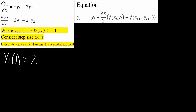This is for one equation. We will also do another equation for y2(1), but right now we're just doing y1(1). So plus delta x — delta x is 1, the step size — so 1 divided by 2. Now we use the dy1/dx equation. So we have xi and yi: when x is equal to 0, that gives us 0 times y1. The value of y1 when x is equal to 0 is 2, so times 2. Minus 3 times y2 — the value of y2 when x is equal to 0 is 1, so times 1.